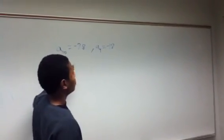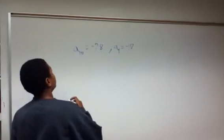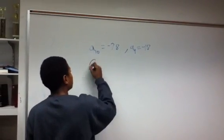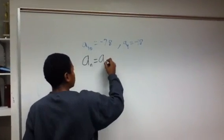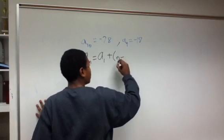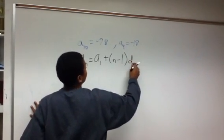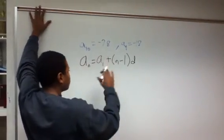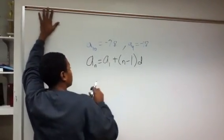These are supposed to be parts of a series in an arithmetic sequence. The equation for an arithmetic sequence is a sub n equals a sub 1 plus the quantity of n minus 1 times d, where d is the rate of change.